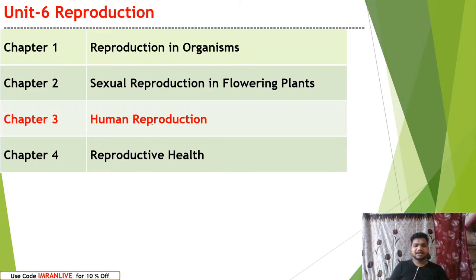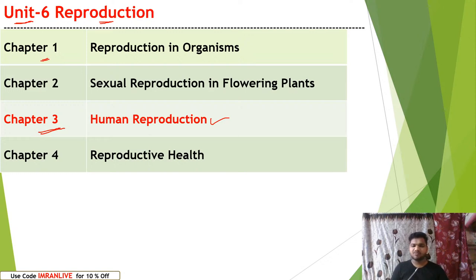We are dealing with class 12 NCERT chapter number 6, that is reproduction. Within that, we are dealing with chapter number 3, human reproduction. All topics will be covered — sexual reproduction in flowering plants, reproductive health, and we have recently completed chapter 1, reproduction in organisms, which you can watch from our YouTube profile. In this session, we are going to start chapter 3, human reproduction, specifically the male reproductive system.